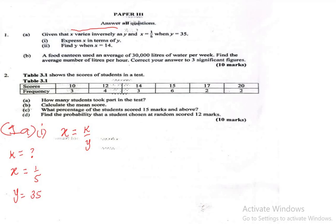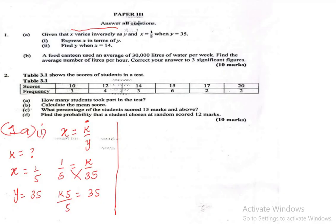To express x in terms of y, we need to solve for k and find its value. We substitute the values into the equation: 1/5 equals k over 35. To get the value of k, we cross multiply — k times 5 equals 35 times 1, so 5k equals 35. Dividing both sides by 5 gives k equals 7. Now that we have the value of k, we can express x in terms of y: x equals 7 over y. That is the answer for 1a(i).